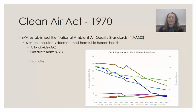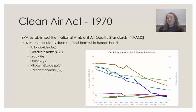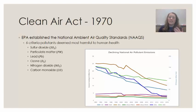The Clean Air Act was passed in 1970, and through it the Environmental Protection Agency established the National Ambient Air Quality Standards, or NAAQS. This created six criteria air pollutants that you need to know: sulfur dioxide, particulate matter, lead, ozone, nitrogen dioxide, and carbon monoxide.